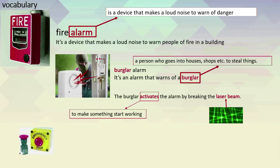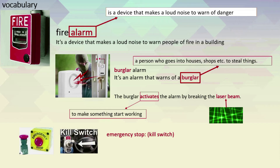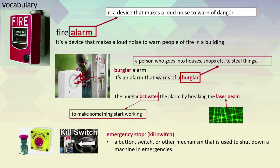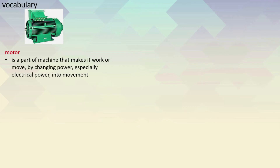What is this? It's called an emergency switch, also known as a kill switch. It's a button, switch, or other mechanism that is used to shut down a machine in case of emergencies. What is this? It's a motor. It is a part of a machine that makes it work or move by changing power, especially electrical power, into movement.